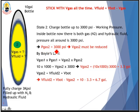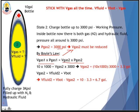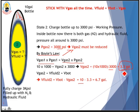By Boyle's Law, the volume of the gas is reduced. The equation is: V_gas1 × P_gas1 = V_gas2 × P_gas2. So 10 × 1000 = V_gas2 × 3000. We take 10,000 divided by 3000, giving V_gas2 = 3.3 gallons — the volume of nitrogen after the system is fully charged. We then take the bottle volume of 10 gallons minus 3.3 gallons, giving 6.7 gallons — the volume of hydraulic fluid at the fully charged state.